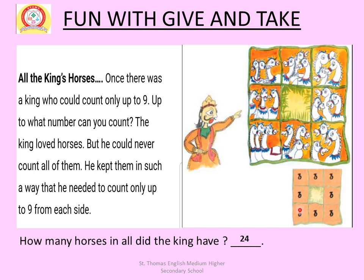The arrangement was: 3 plus 3 plus 3 equals 9 on each side. From all sides it will be 9, so the king would not know the total. How many horses in all did the king have? That is 3 plus 3 plus 3 plus 3 plus 3 plus 3 plus 3 plus 3 equals 24. The king had 24 horses in all.